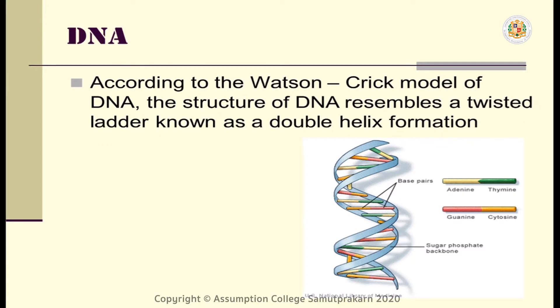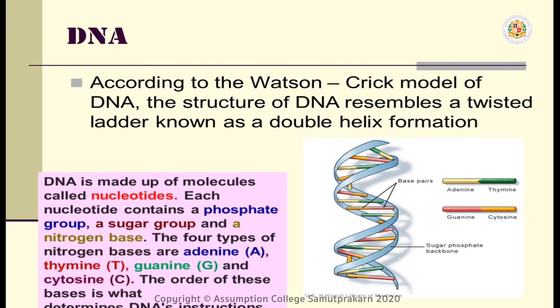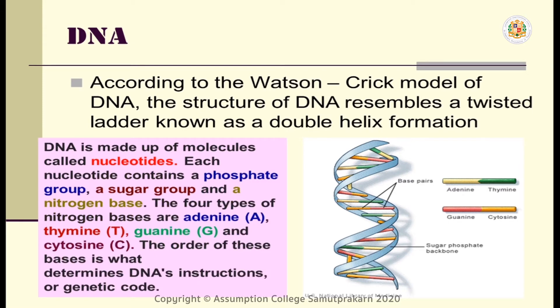According to the Watson-Crick model of DNA, the structure of DNA resembles a twisted ladder known as a double helix formation. This is how it looks like if you take a look over here. DNA is made up of molecules called nucleotides. Each nucleotide contains a phosphate group, a sugar group, and a nitrogen base.